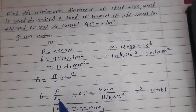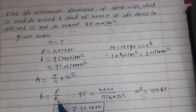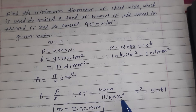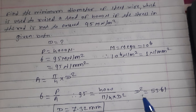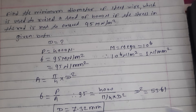Force is given and sigma is given, then the only unknown is area. Area is pi by 4 into D square. Put this value into the stress equation, then you will get the value of D equal to 7.32 mm.